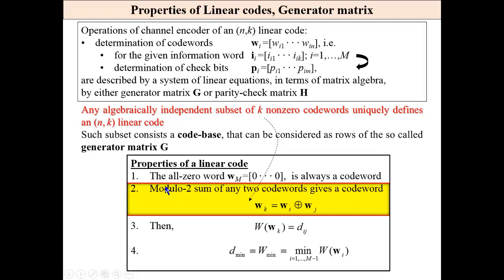Properties of linear code. The all-zero word always exists. The second property, and most important: the modular-two sum of any two codewords gives a codeword. Based on this property, we may say that any algebraically independent subset of K non-zero codewords uniquely defines the code. Such a subset constitutes a code base that can be considered as the rows of the so-called generator matrix.